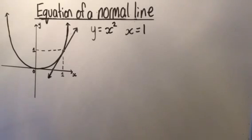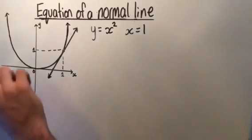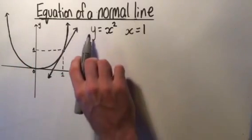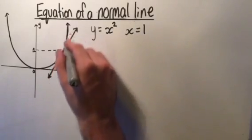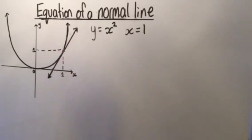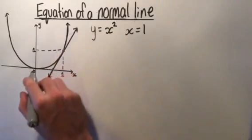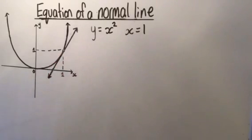We've already looked at how to find the equation of a tangent line, and we remember that a tangent is a line that hits another line or curve at one point only. On this diagram, I've drawn the curve y equals x squared and we're looking at the point x equals 1. This line is a tangent — it touches the curve y equals x squared one time only. It doesn't go through the curve again, and it only touches the curve at the point x equals 1.